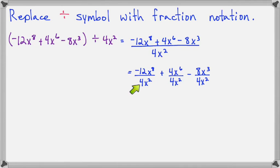Negative 12 over 4 makes negative 3, and x to the 8th over x squared makes x to the 6th. For the second term, 4 divided by 4 makes 1, and x to the 6th over x to the 2nd makes x to the 4th.